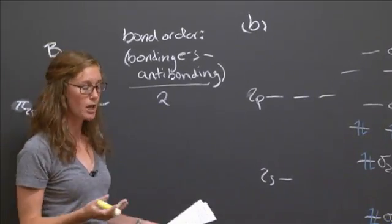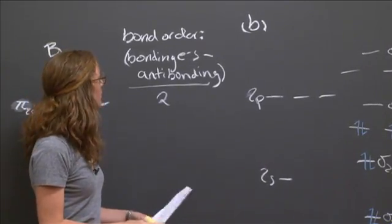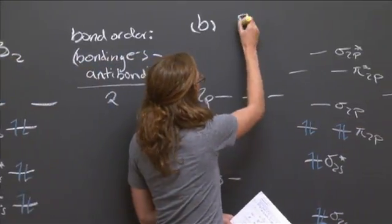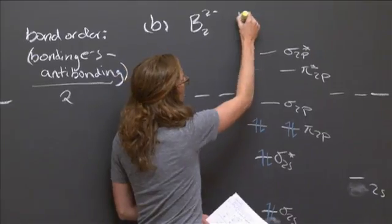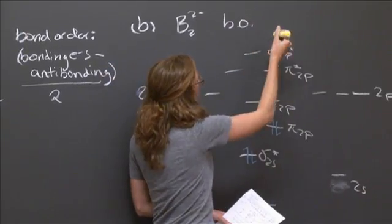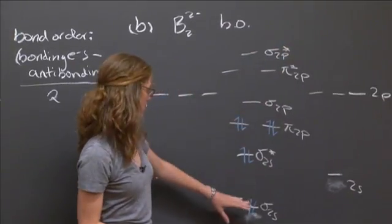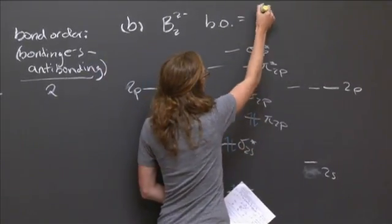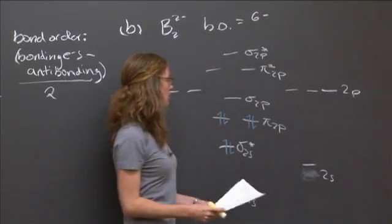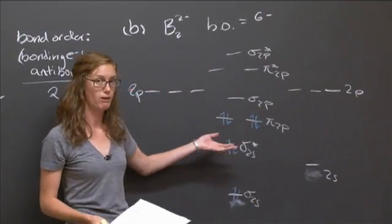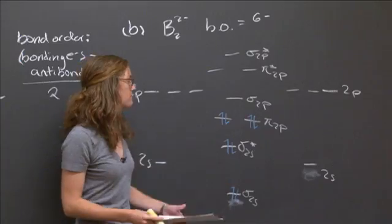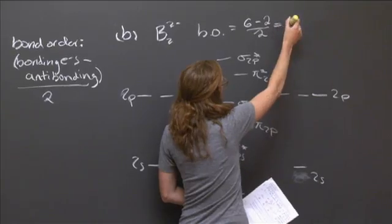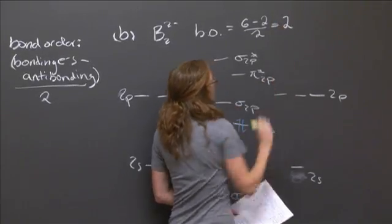The bond order is the bonding electrons minus the antibonding divided by two. For B₂²⁻, which we're talking about over here, the bonding order—we have six bonding electrons in bonding orbitals and we have two in antibonding orbitals. Divide it by two, and that gives us a bonding order of two.